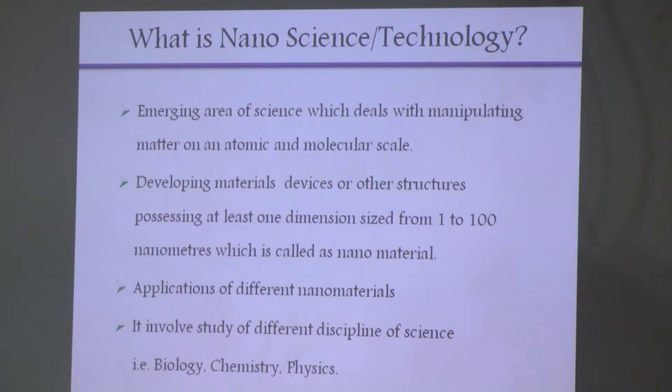Today we hear a lot about nanoscience and nanotechnology. Nanoscience means we are manipulating matter at the atomic and molecular scale, and developing materials or devices based on structures within the range of 1 to 100 nanometers is called a nanomaterial. It is not a single science area — it is a multidisciplinary area involving biology, chemistry, physics, electronics, and so on.